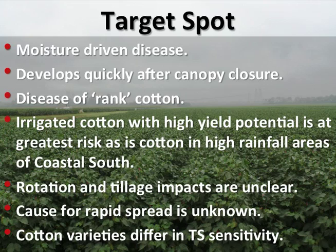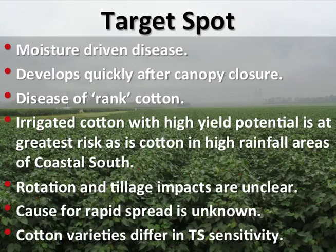This slide illustrates the factors that greatly impact the development of target spot in cotton. Target spot is a moisture-driven disease that quickly develops after canopy closure and is more damaging in rank cotton. So far, attempts to tie increasing target spot severity with cotton cropping frequency or strip no-till production practices have failed. There is no explanation for the rapid spread of target spot from southwest Georgia throughout the Southeast over the past two years, but some widely grown cotton varieties are highly susceptible to this disease.